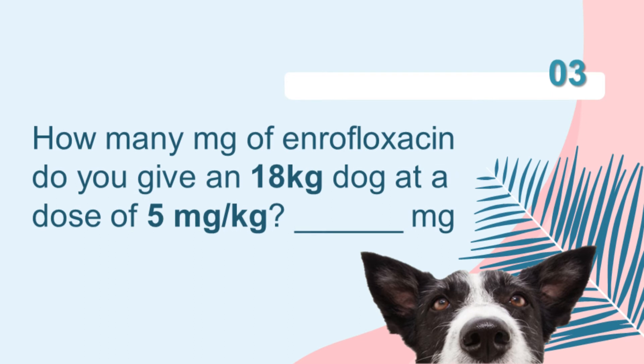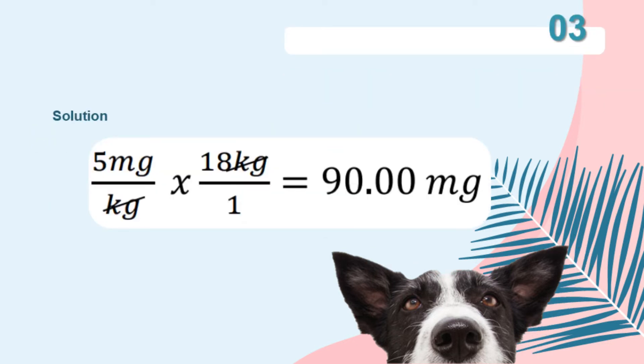For the third problem: How many milligrams of amoxicillin do you give an 18-kilogram dog at a dose of 5 milligrams per kilogram? To calculate, we multiply 5 milligrams per kilogram by the weight of the dog, which is 18 kilograms. The answer will be 90 milligrams.